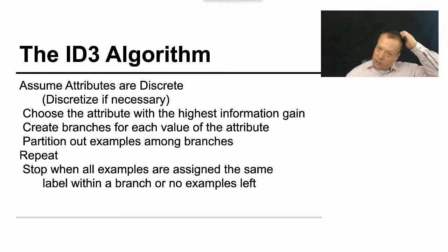So what it did was you assume that the attributes are discrete, you choose the attribute with the highest information gain. You then create branches for each value of that attribute, and you partition out the examples among the branches the way we were describing.